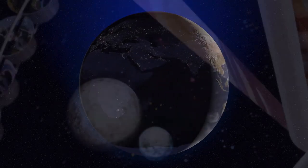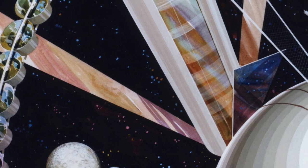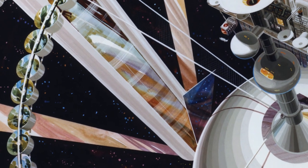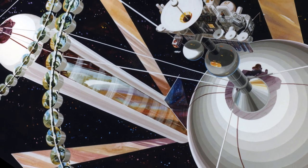If the Swarm was composed entirely of O'Neill Cylinders, large rotating habitats 4 kilometers in radius and 20 kilometers long, with an internal area of 800 square kilometers, it would contain 350 trillion of them.